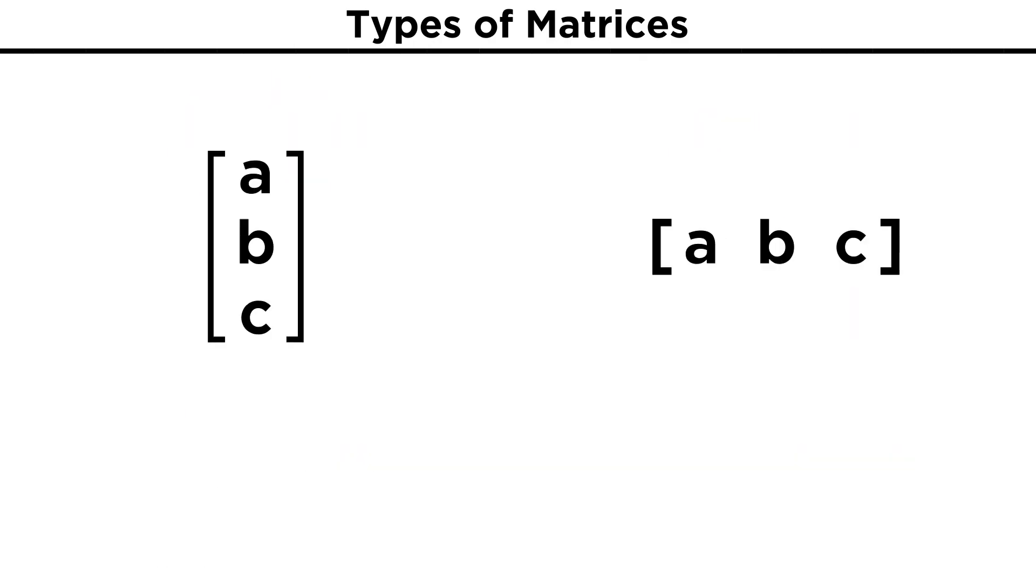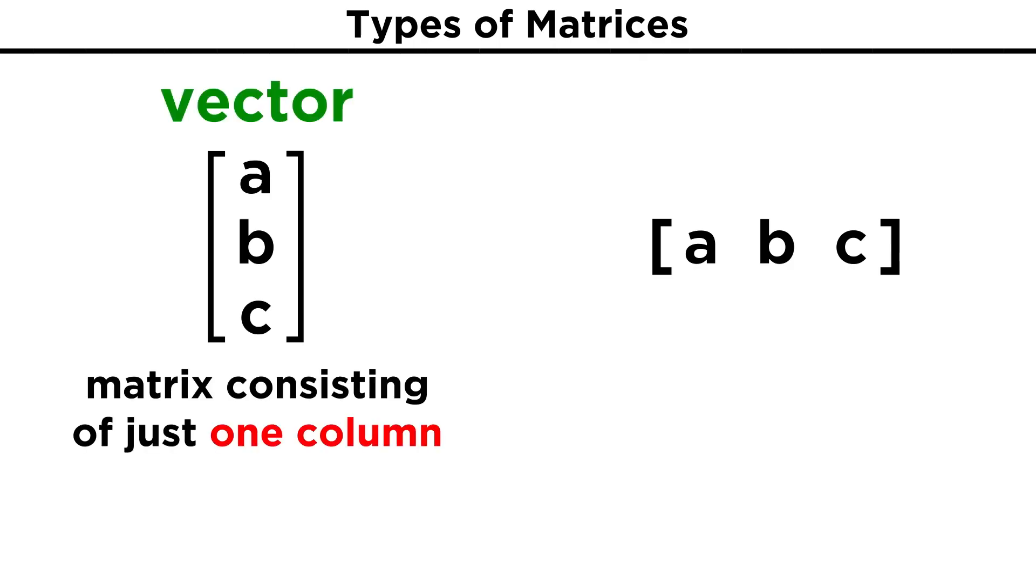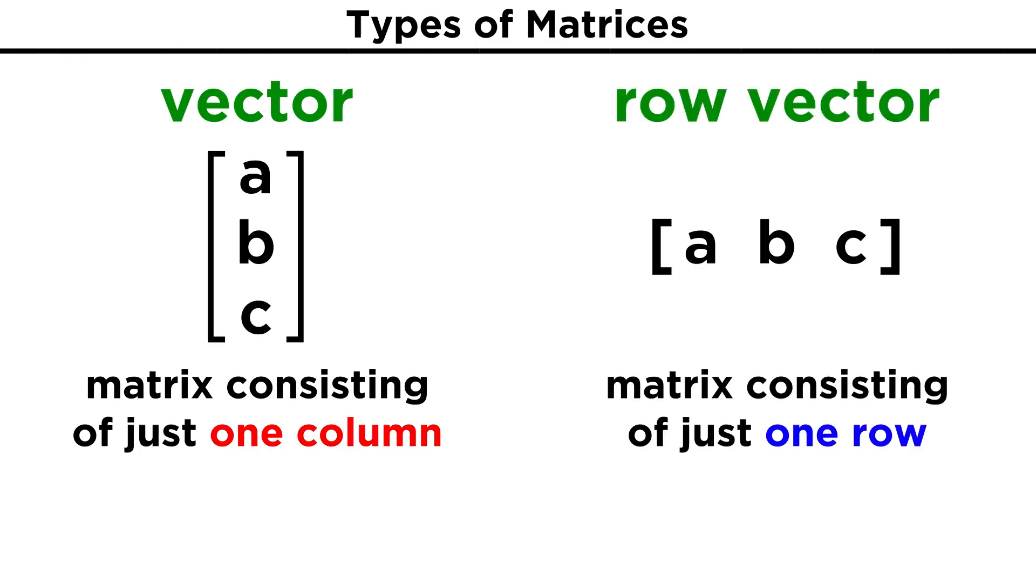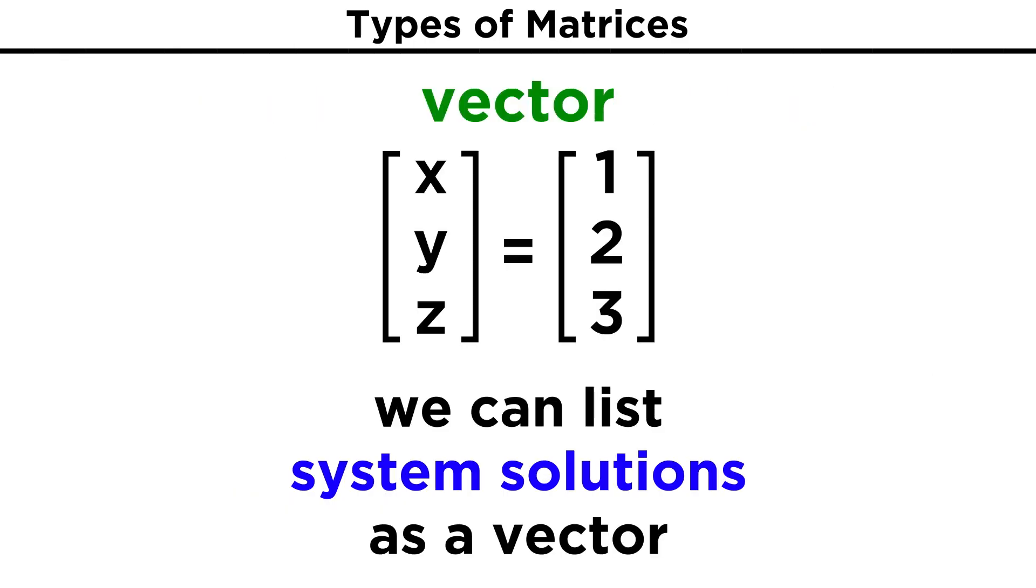There are also matrices consisting of just one row or column, and these have special names. A matrix with a single column is called a vector. A matrix with a single row is called a row vector. Typically when using the word vector in this context, a column is being specified. It is common to list the solution of a system of linear equations as a vector in this manner, such as the following which clearly shows the values of x, y, and z.